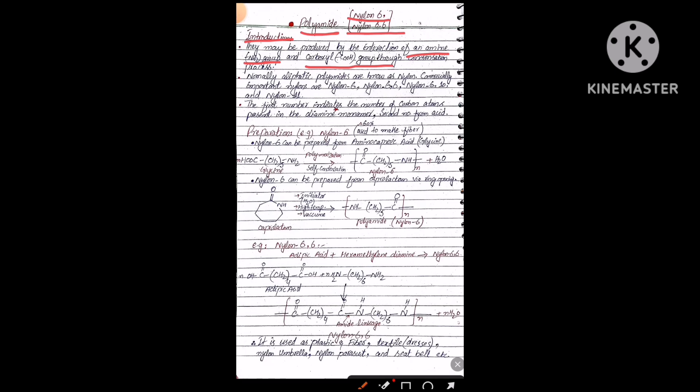Second point: normally aliphatic polyamides are known as nylon, and commercially important nylons are nylon 6, nylon 6-6, nylon 6-10, and nylon 11. These are the examples which we have prepared commercially.